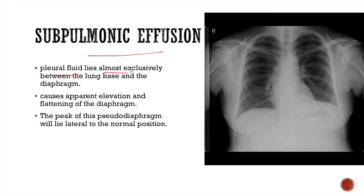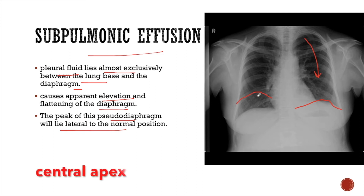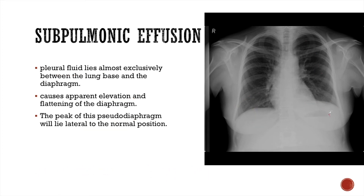Subpulmonic effusion occurs when pleural fluid lies almost exclusively between the lung base and the diaphragm, causing apparent elevation and flattening of the diaphragm. The peak of this pseudo-diaphragm lies lateral to the normal position, whereas a truly elevated hemidiaphragm has its apex in a central location. Additionally, in subpulmonic effusion, the fundic gas of the stomach remains in normal position, whereas a truly elevated diaphragm would shift the gas upward. Subpulmonic effusion should not be confused with elevated hemidiaphragm.